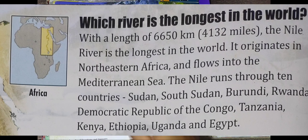Which river is the longest in the world? With a length of 6,650 km, the Nile River is the longest in the world. It originates in Northeast Africa and flows into the Mediterranean Sea.